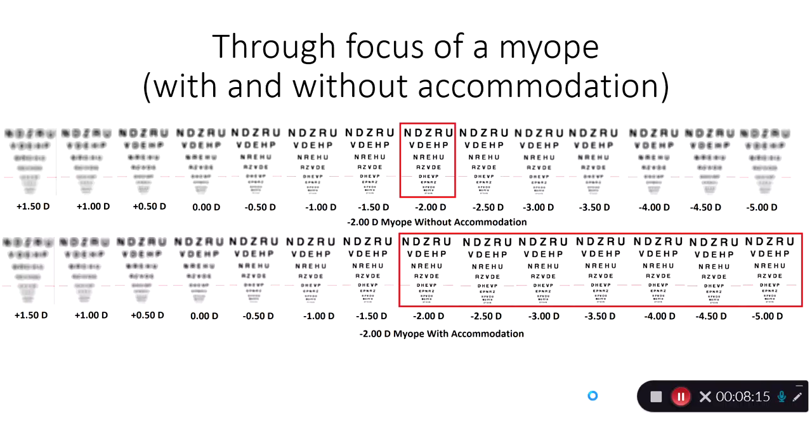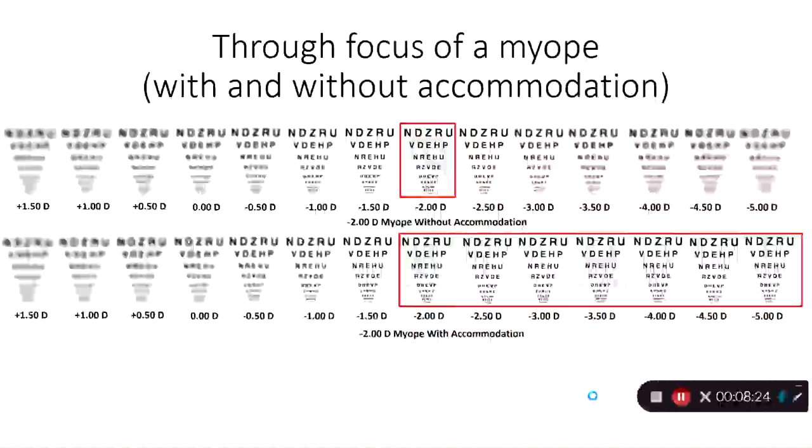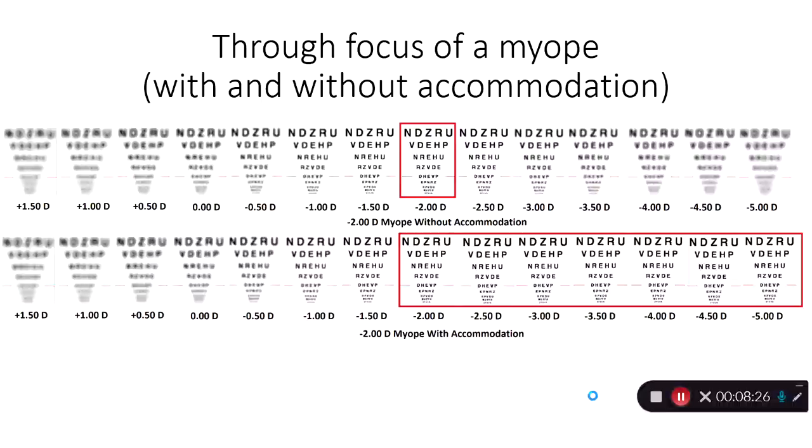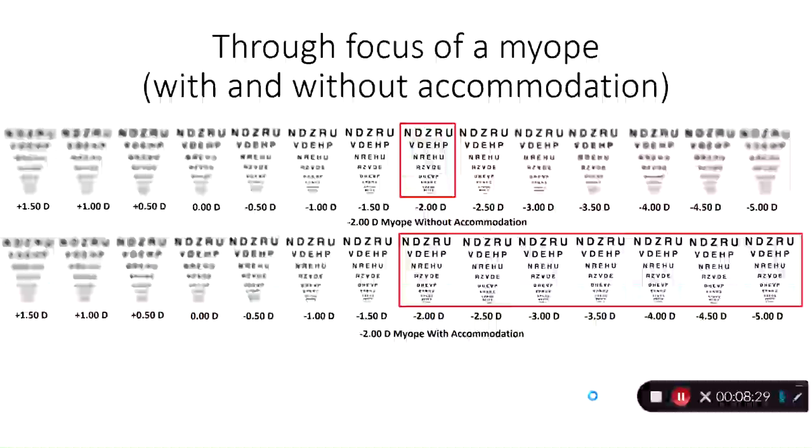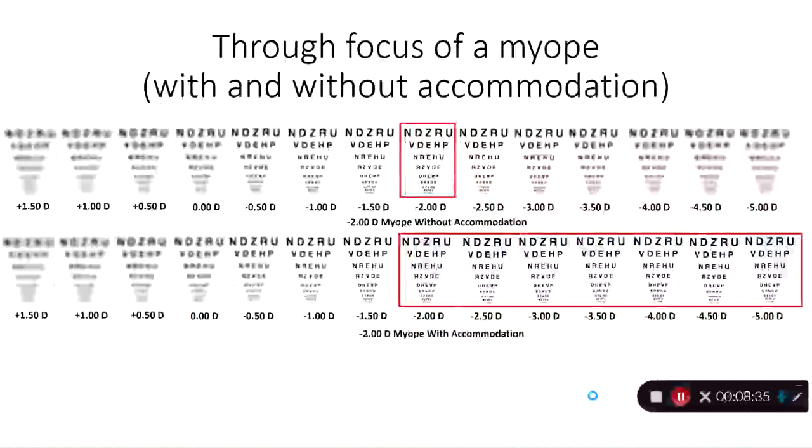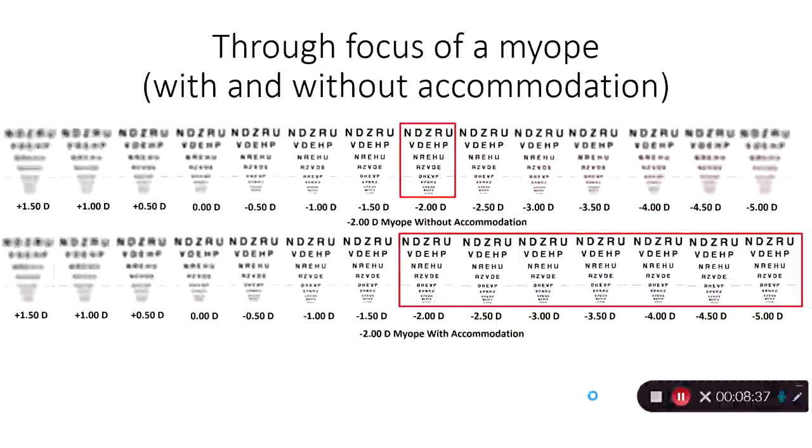Now, let's look at myopes. The only difference between a myope and an emmetrope, with and without accommodation, is that their point of focus, of optimal focus, has been shifted, in this case, two diopters. So without accommodation, it's just like the condition with emmetropes, where they have a fine endpoint of minus two diopters, and anything plus or minus around that, more or less minus around that, makes the image less clear or blurry. However, though, with accommodation, because younger people have accommodation, as we add more minus past the minus two diopters, the image stays relatively clear all the way through, just like before.